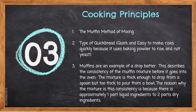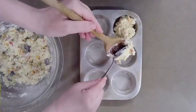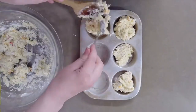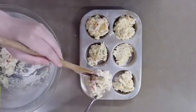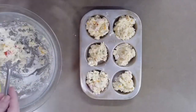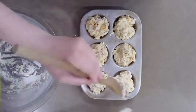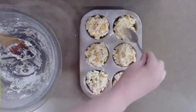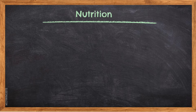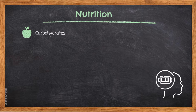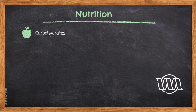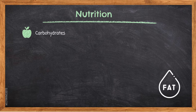The mixture is thick enough to be dropped from a spoon but too thick to be poured from a bowl. This consistency exists because there is approximately one part liquid ingredients to two parts dry ingredients. Nutrition: carbohydrates are responsible for supplying the body with energy, sparing protein, and assisting the utilization of fats.